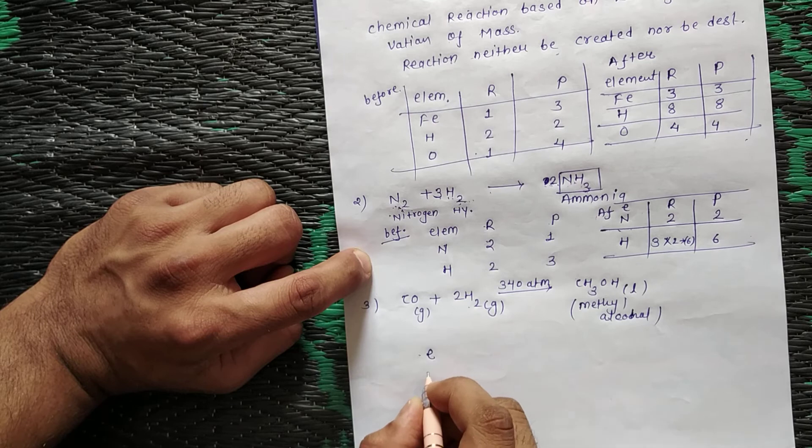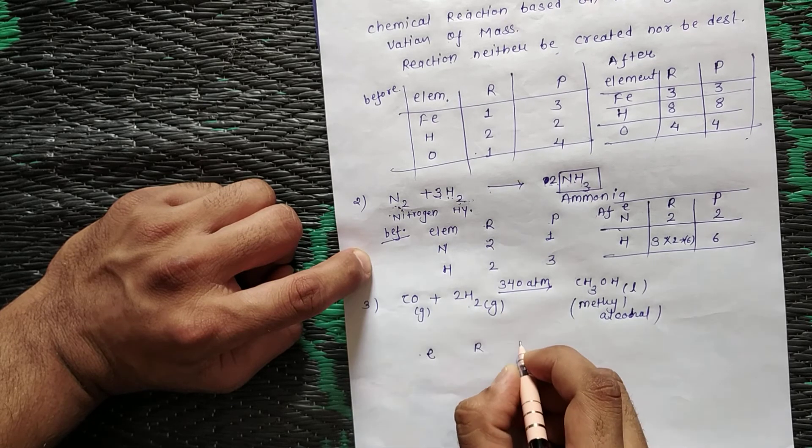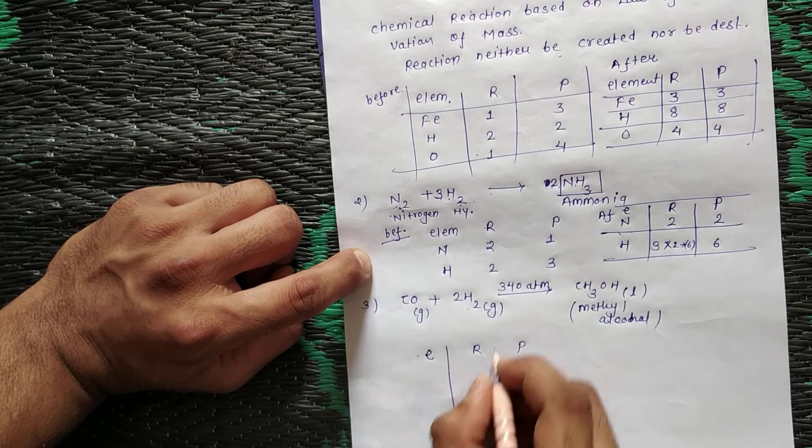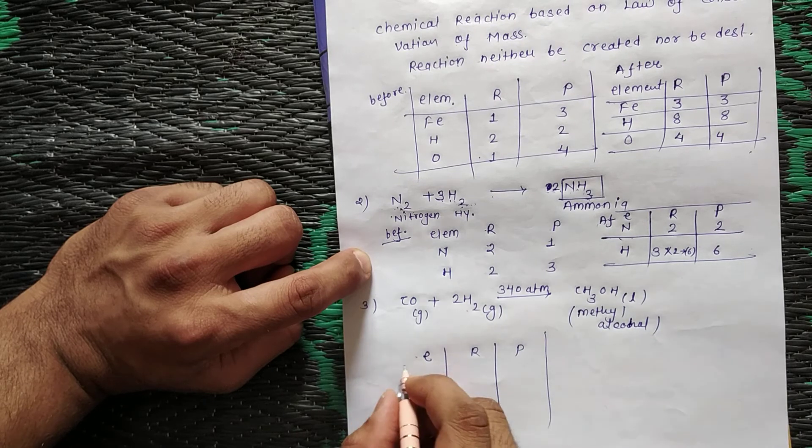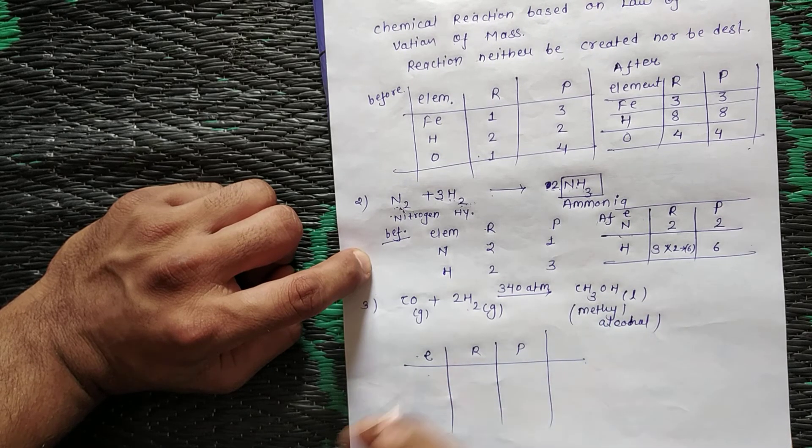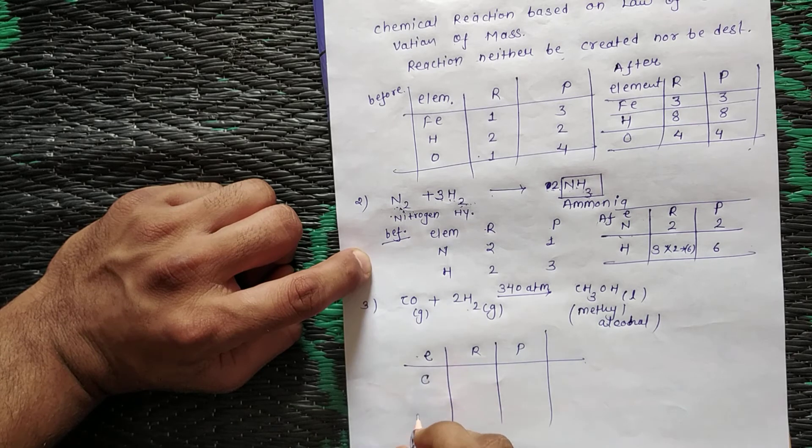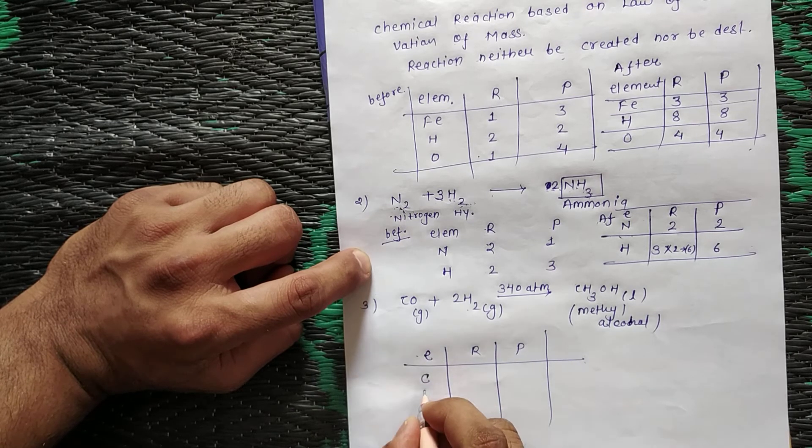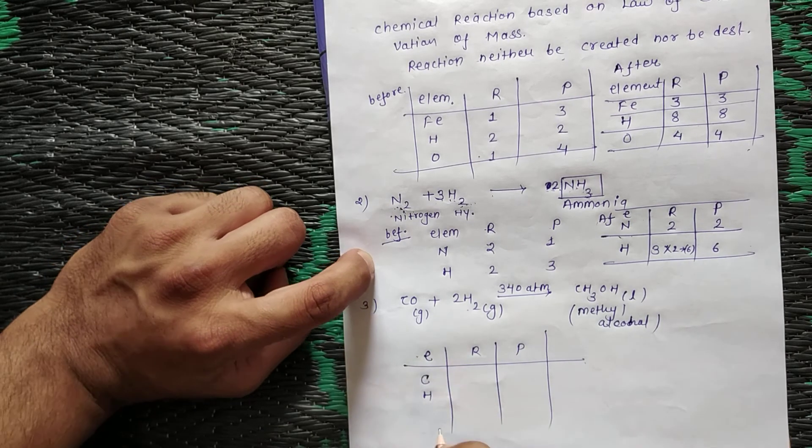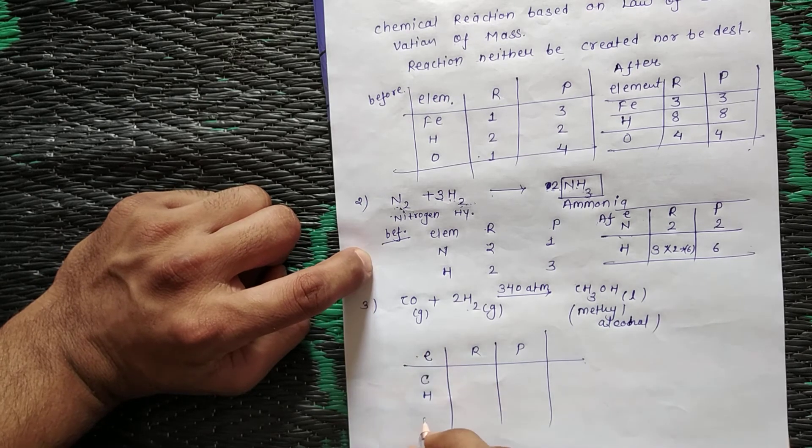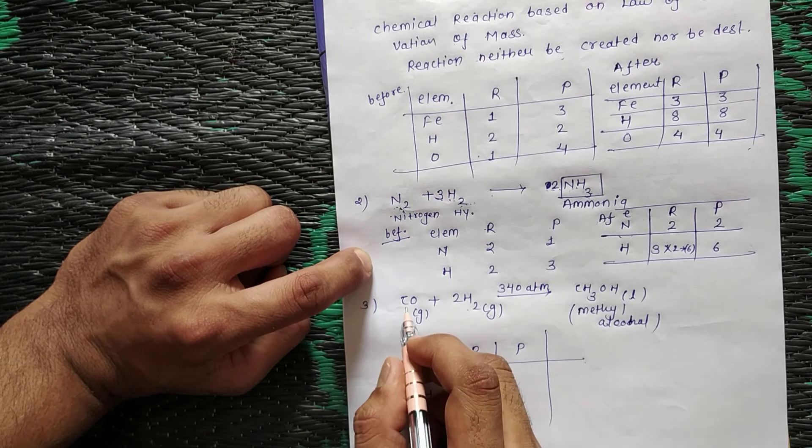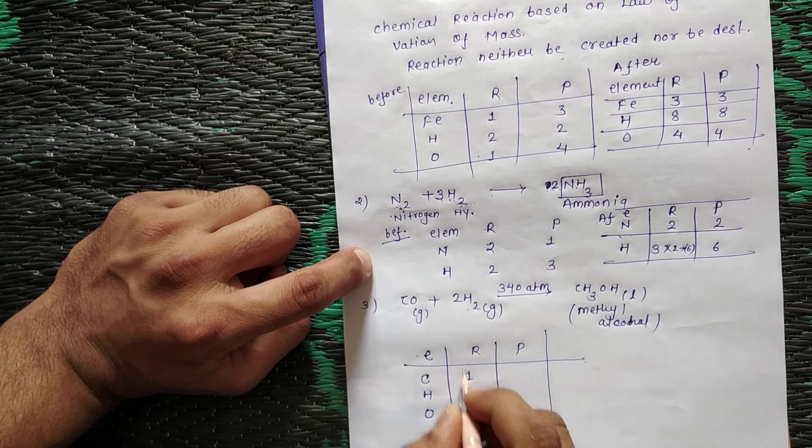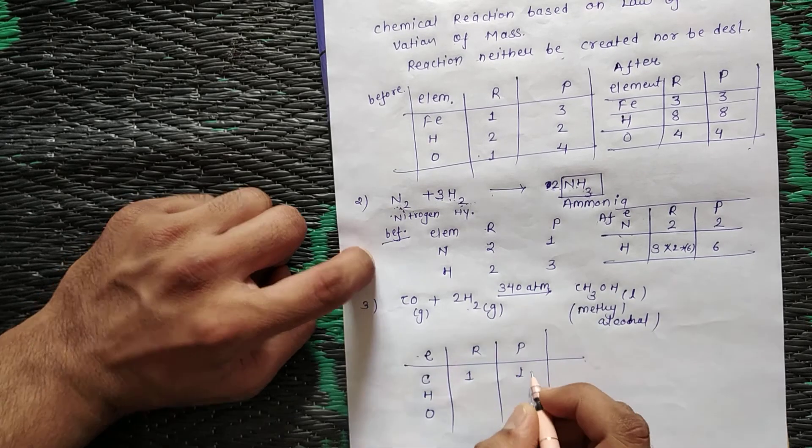The elements we have are: carbon, hydrogen, and oxygen. We list element, reactant, and product. We have one carbon forming one carbon.